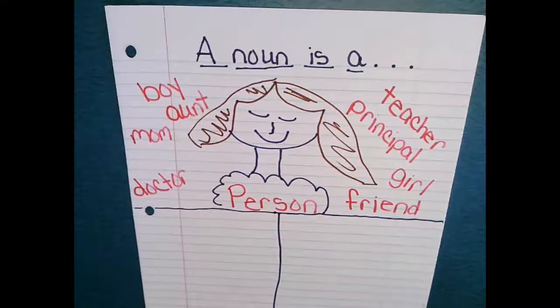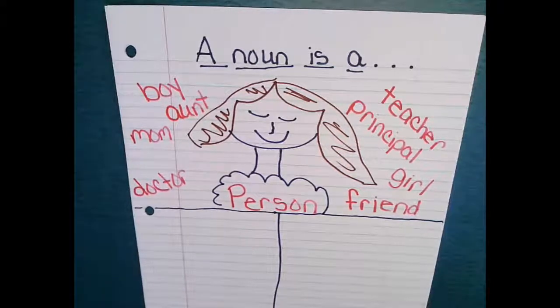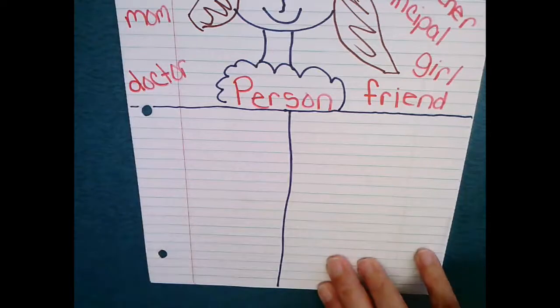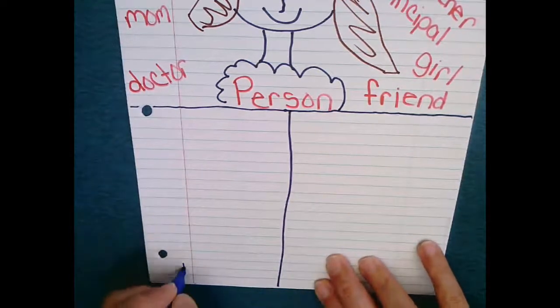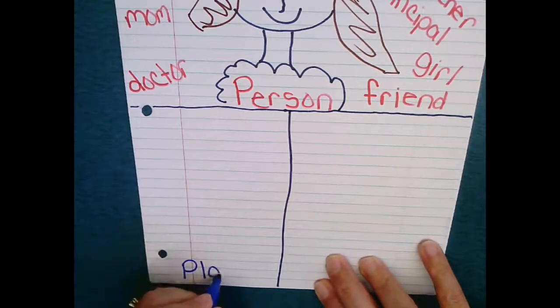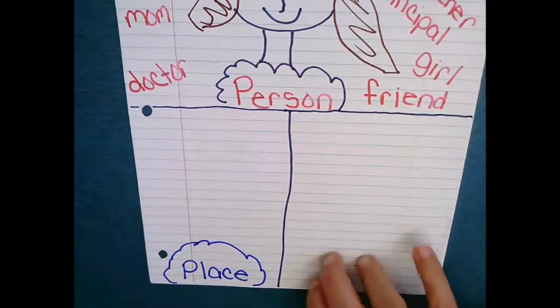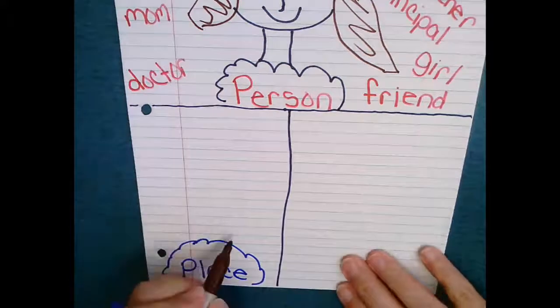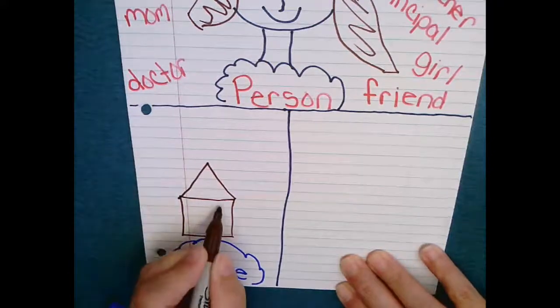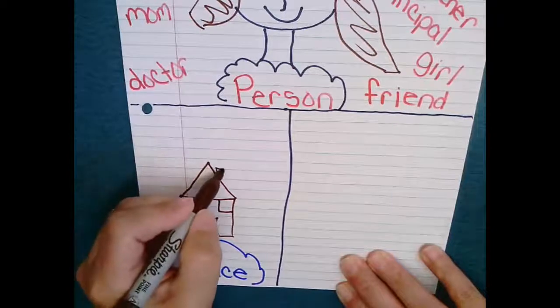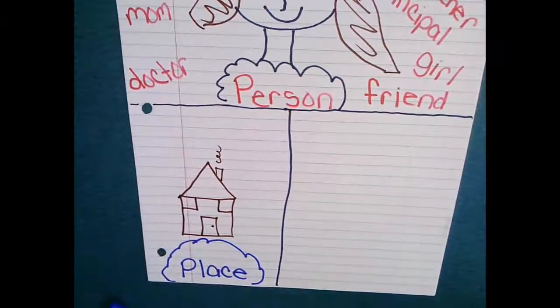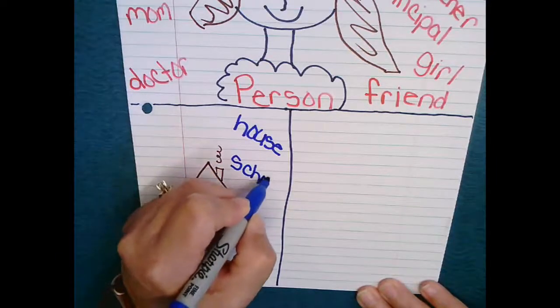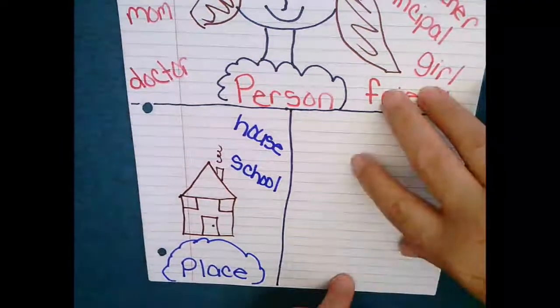All right, so that finishes up our person. Let's now, we also know that a noun can be a place. So let's take the left hand side over closest to our holes and let's write 'place'. And for a place I'm just going to draw a house, how about that, or it's some kind of building. Give it some windows and a door, chimney.